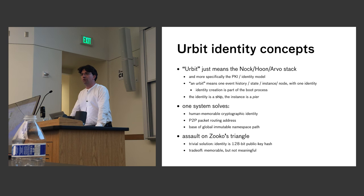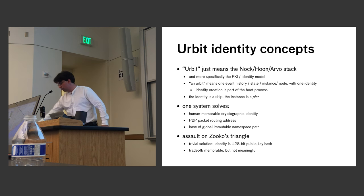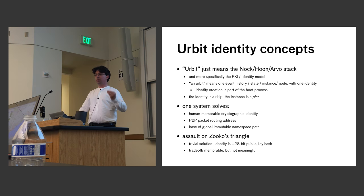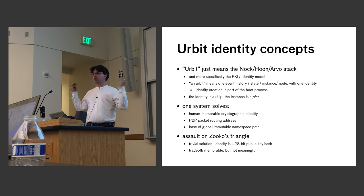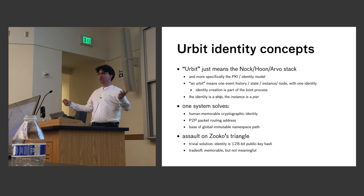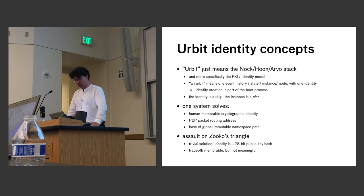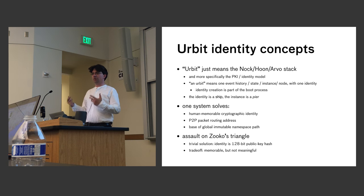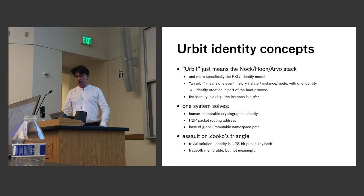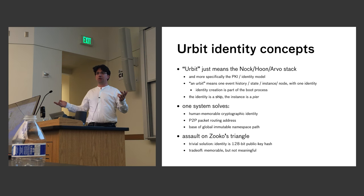There's a problem called Zooko's Triangle. It says there are three things you want out of an identity system: human meaningful names, security, and decentralization — and you can only get two of those three. Facebook has security and human meaningful names but is not decentralized. BitTorrent is decentralized but doesn't have human meaningful names. As an OS guy, what you're taught to do is find the trade-off and almost solve the problem.